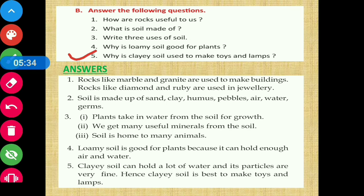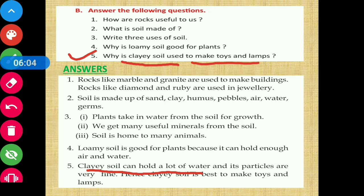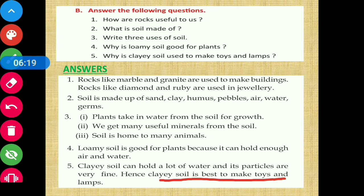Question number five: why is clay soil used to make toys and lamps? Clay soil can hold a lot of water, and its particles are very fine and evenly divided. Hence, clay soil is best to make toys and lamps. Because its particles are fine and it can hold a lot of water between its particles, it is useful for making different kinds of toys, pots, and lamps.